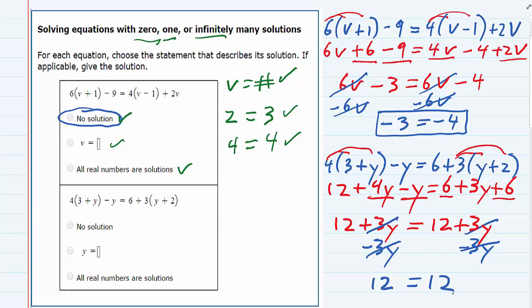So our solution is not 12. We did not get y equals 12. Our solution became 12 equals 12, which is always true. So that means we have infinitely many solutions to this equation, and all real numbers are solutions here.